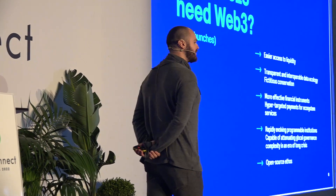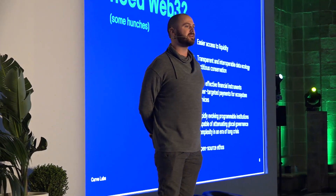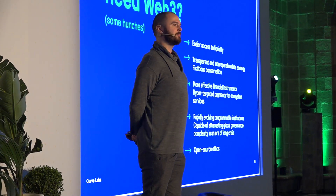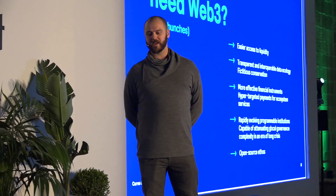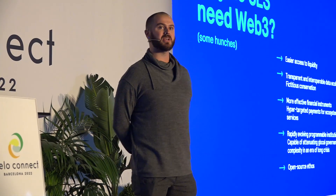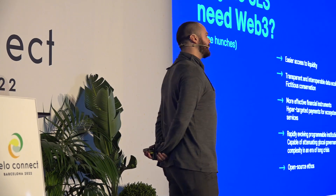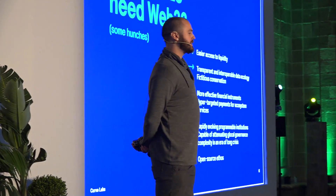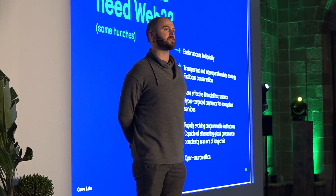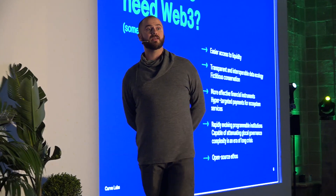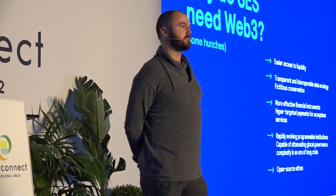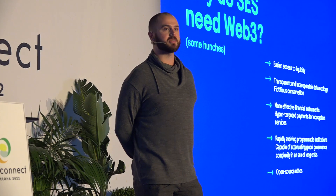We have transparent interoperable data ecology — we can see on-chain the proofs that were made and the data brought forward, giving us an unprecedented ability to really understand what's going on on the ground. I believe we can create more effective financial instruments, such as hyper-targeted payments for ecosystem services. Someone caretaking for an endangered species provides a verifiable proof thereof, that person can get their money — you could think of this as a bountification type program.